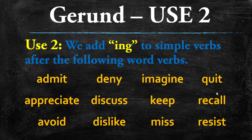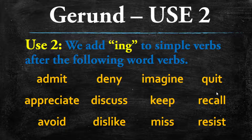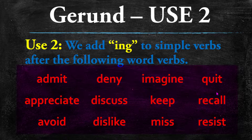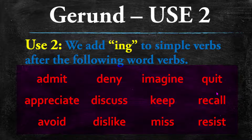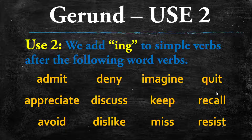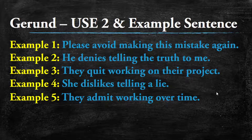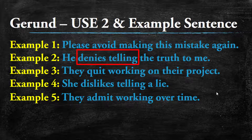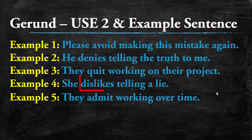Gerund use two: we add '-ing' to simple verbs after the following common words — admit, appreciate, avoid, deny, discuss, dislike, imagine, keep, miss, quit, recall, and resist. There are more, but these are the most common. Examples: 'Please avoid making this mistake again.' 'He denies telling the truth to me.' 'They quit working on the project.' 'She dislikes telling a lie.' 'They admit working overtime.'